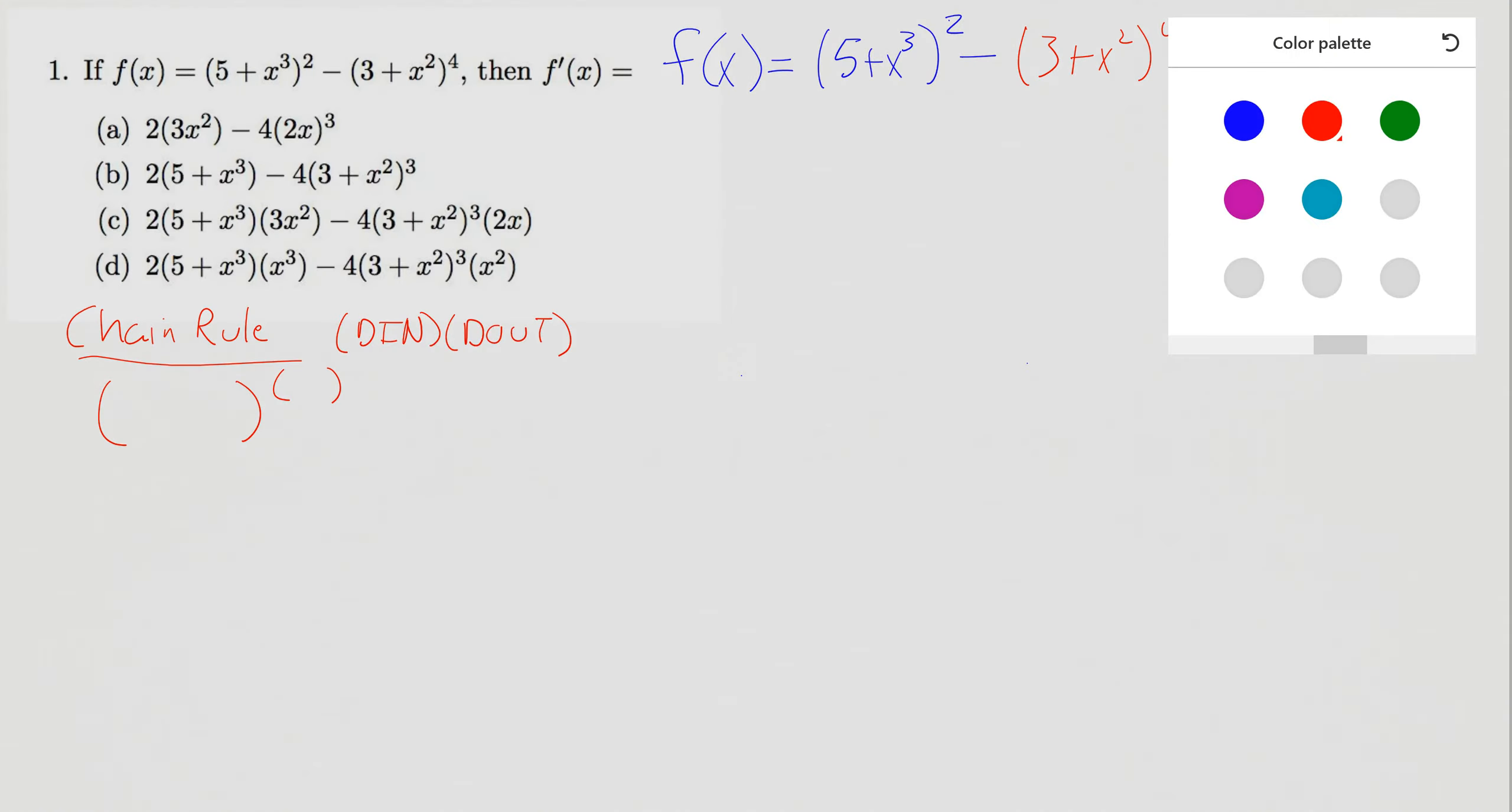So if I take these in bite-sized chunks and just look at that first piece here to begin with, and I look at my 5 plus x cubed squared, the 5 plus x cubed, that's what I would consider to be the inside piece. And so I'll look at that piece as its own chunk. And then the outside piece is really that squared power. So it's a bunch of stuff to the second power. So taking these pieces and finding my d in, the derivative of the inside,